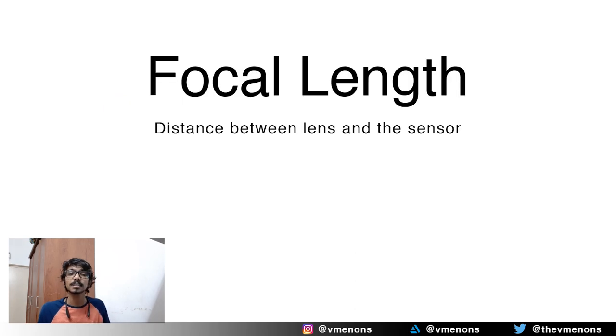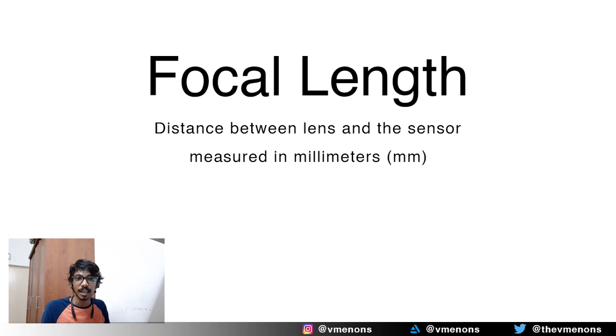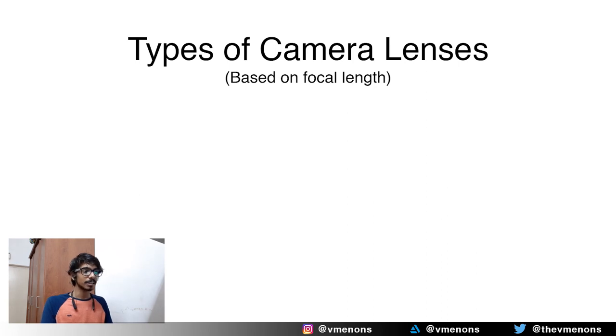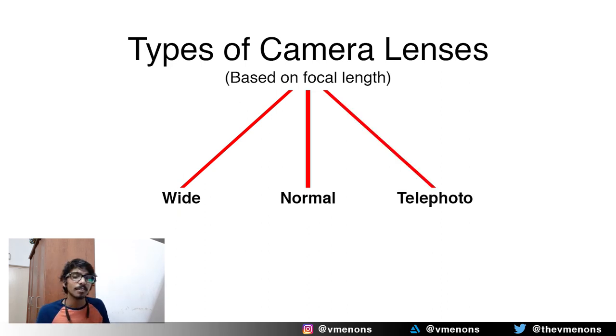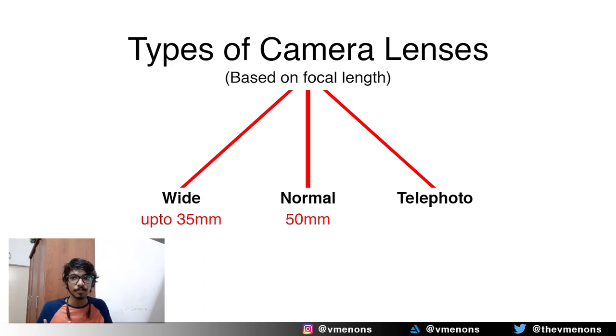Put simply, focal length is the distance between the camera's lens and the camera's sensor, and it is measured in millimeters. Now this is a 50 millimeter lens, and if this is mounted onto my camera, it means that there will be 50 millimeters of distance between the backmost glass lens and the camera's sensor. Camera lenses are divided into three types based on focal length: wide lenses, normal lenses, and telephoto lenses. Wide lenses provide a small focal length of up to 35 millimeters. A 50 millimeter lens is considered normal because that focal length is closest to the human eye, and every lens with a focal length above 75 millimeters is considered a telephoto lens.